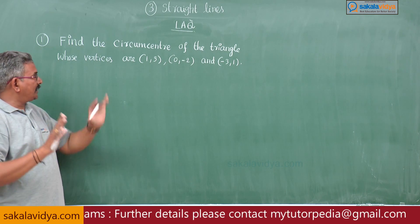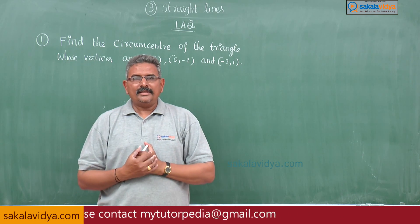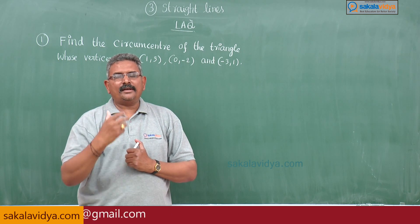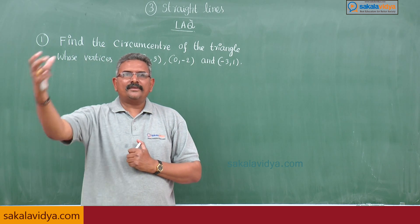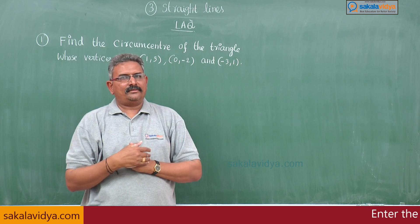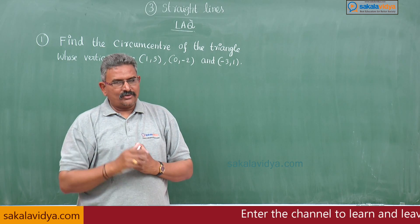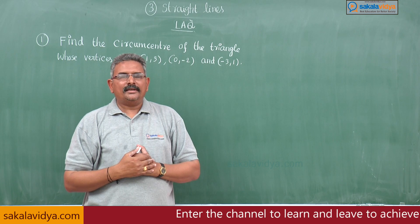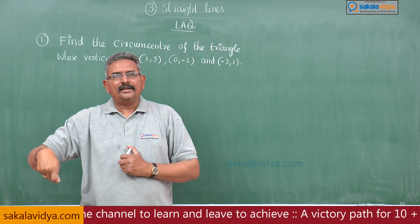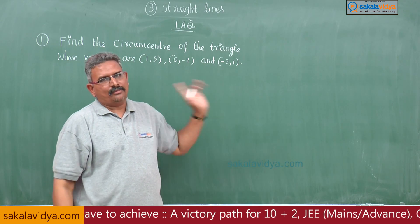The keyword here is circumcentre of the triangle. The circumcentre of the triangle is nothing but the point of concurrence of the perpendicular bisectors of the sides of the triangle. The property of the circumcentre is that it is equidistant from the vertices of the triangle. Using that concept, the circumcentre is the point which is equidistant from the three vertices. That is the basic idea behind this problem.